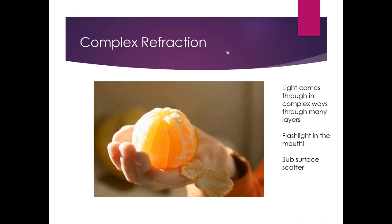Complex refractions — something like an orange — we also describe as subsurface scatter. What's happening is the surface allows light in; it has a lot of different materials and bends going on, but they're still somewhat translucent, so you're getting light bouncing around making it look glowy. A good example: stick a flashlight in your mouth, go into the bathroom, turn off the lights, and look at your face glow. In 3D that's commonly known as subsurface scatter — basically the scattering of light underneath the surface.